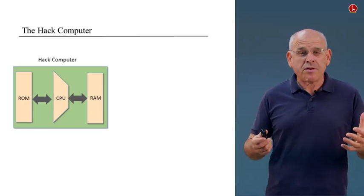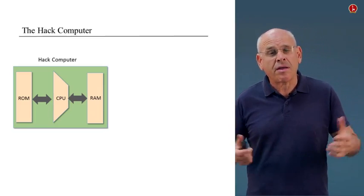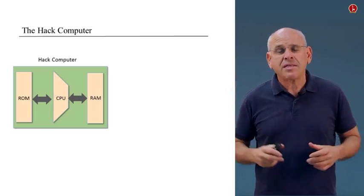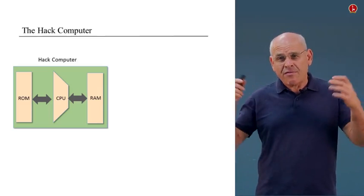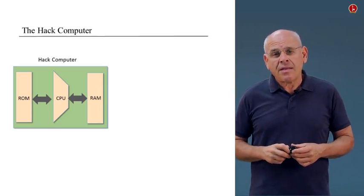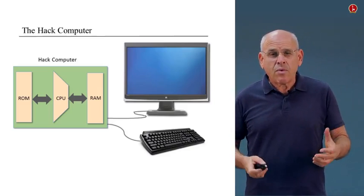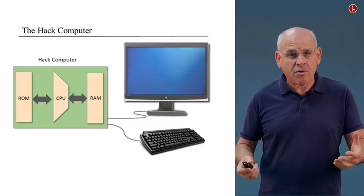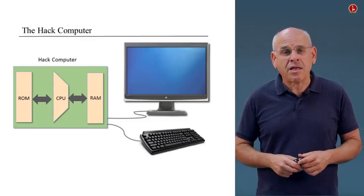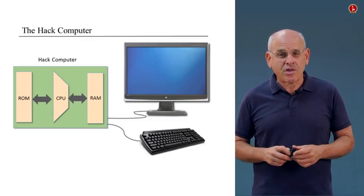Here's the computer in a very broad description, a diagram that captures only some of its main elements. It's going to have a ROM, a CPU, a RAM, and many other chips. Once we build this computer, we're going to connect it to a standard keyboard and display unit, and at this point you can start executing programs.